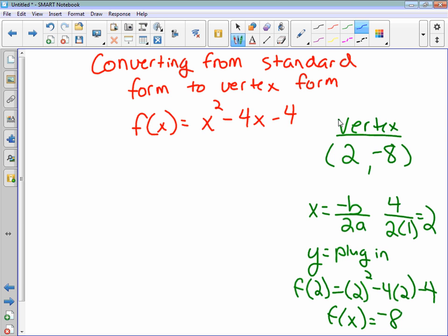The formula for finding the vertex form is f of x equals a, x minus h squared, plus k. Where h, k is the vertex.